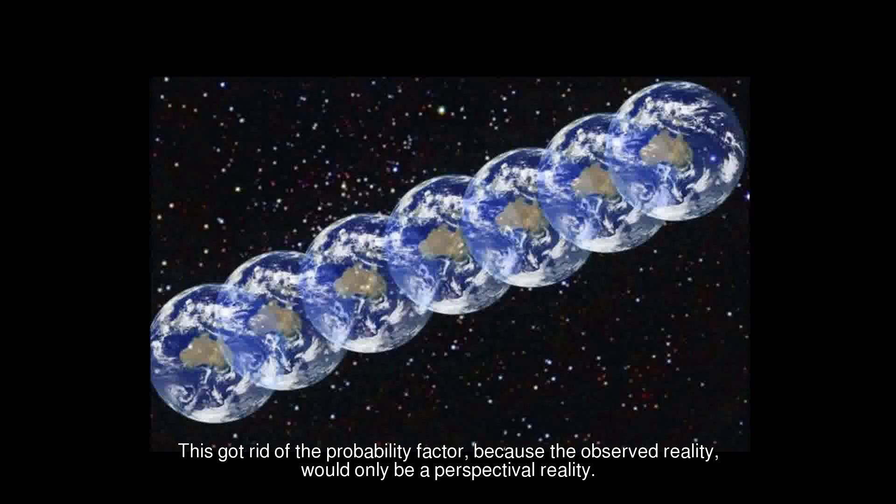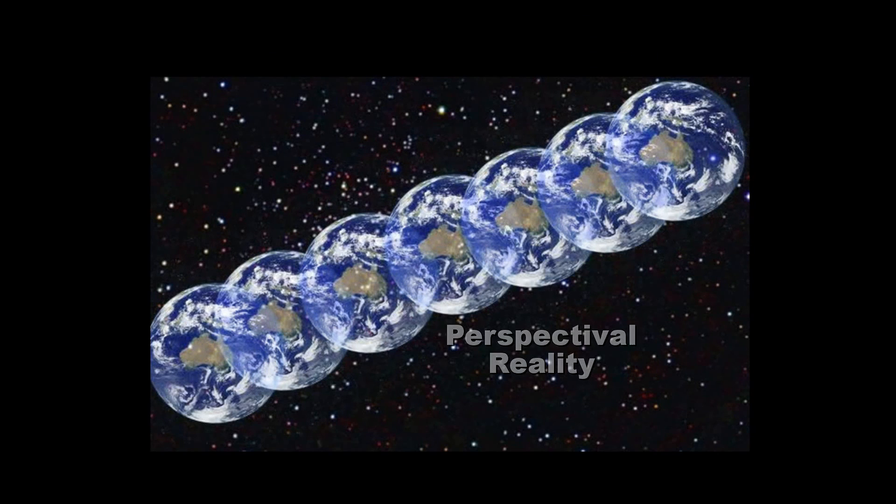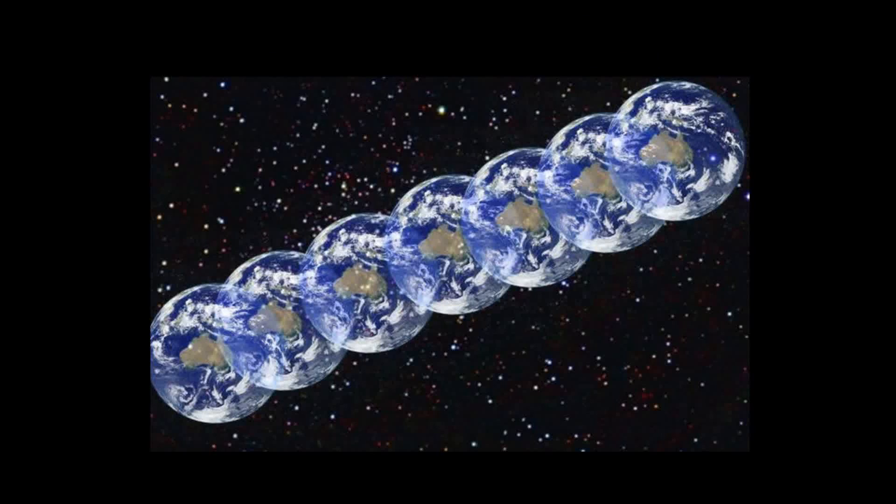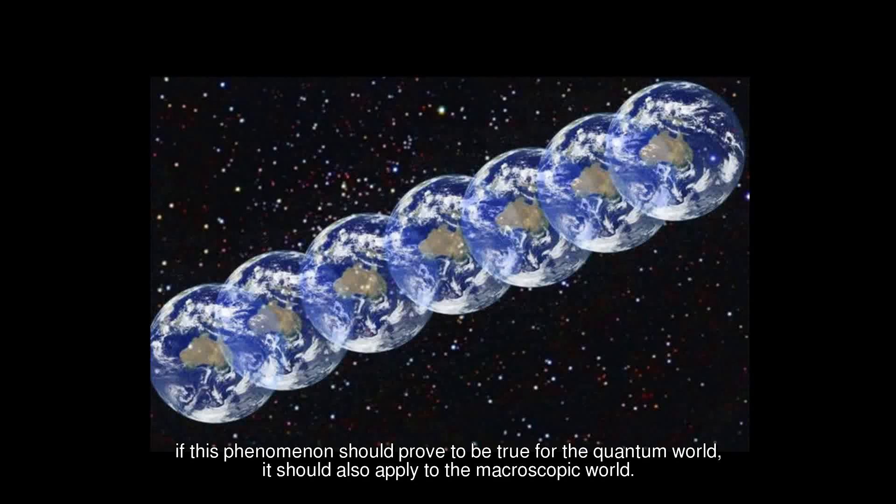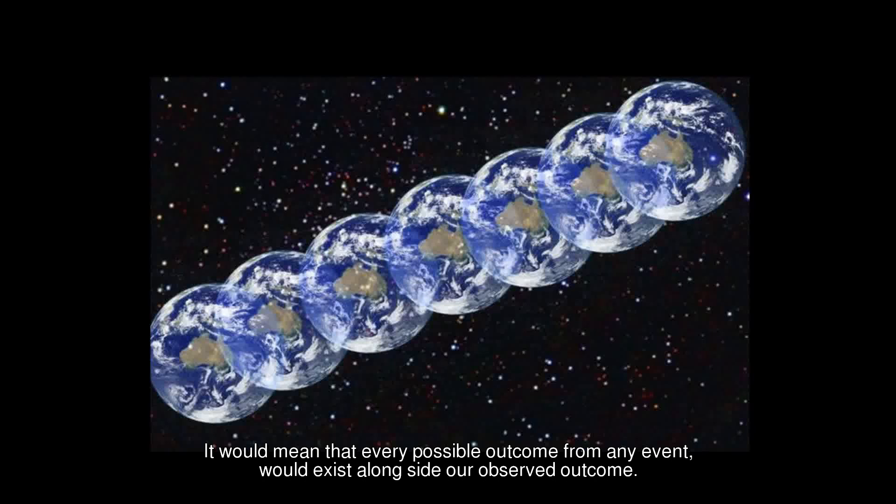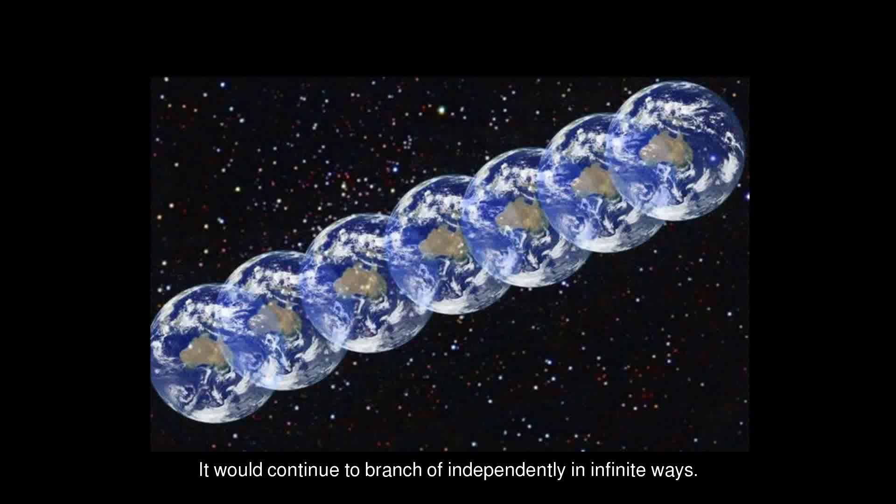This was called the many-world hypothesis. This got rid of the probability factor, because the observed reality would only be a perspectival reality, and the other states also existed, but they remained undefined. If this phenomenon should prove to be true for the quantum world, it should also apply to the macroscopic world. It would mean that every possible outcome from any event would exist alongside our observed outcome, and this would continue to branch off independently in infinite ways.